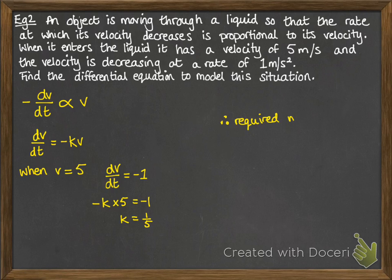So we can rewrite the equation that we were looking for. So dv by dt is equal to minus v over 5, or minus a fifth of v.